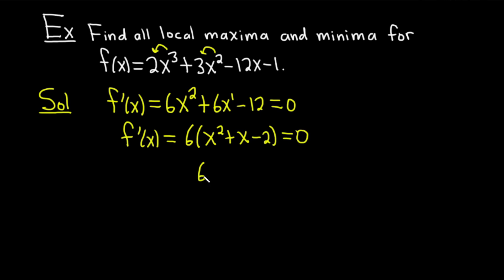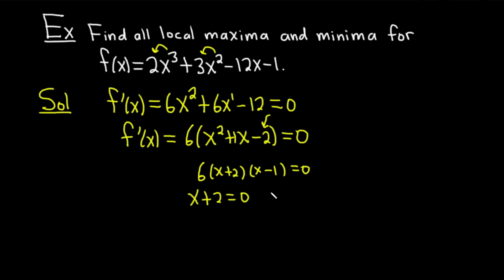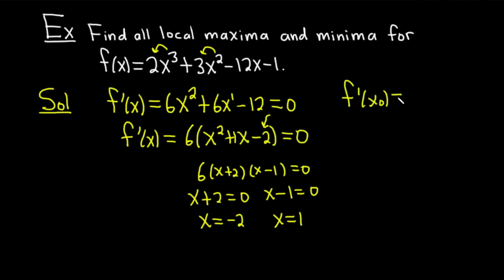This factors further. We get 6 times (x plus 2) times (x minus 1) equals 0. Whenever a product equals 0, you set each factor equal to 0 — you can divide away the 6. Then we get x equals negative 2 and x equals 1. These are the x values where the derivative is 0, so they are our x0 values from the second derivative test — the points where f prime of x0 equals 0.